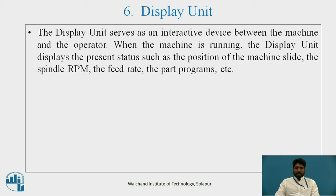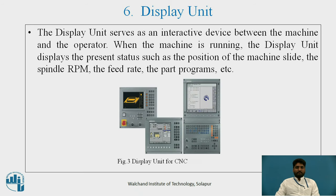The sixth element is the display unit, which serves as an interactive device between the machine and the operator. When the machine is running, the display unit shows the present status such as the position of the machine slides, the spindle RPM, the feed rate, the part programs, etc. Figure 3 shows the display unit for CNC.